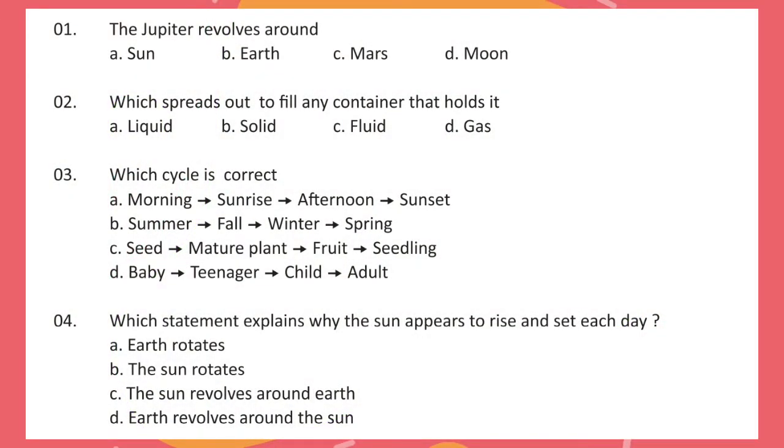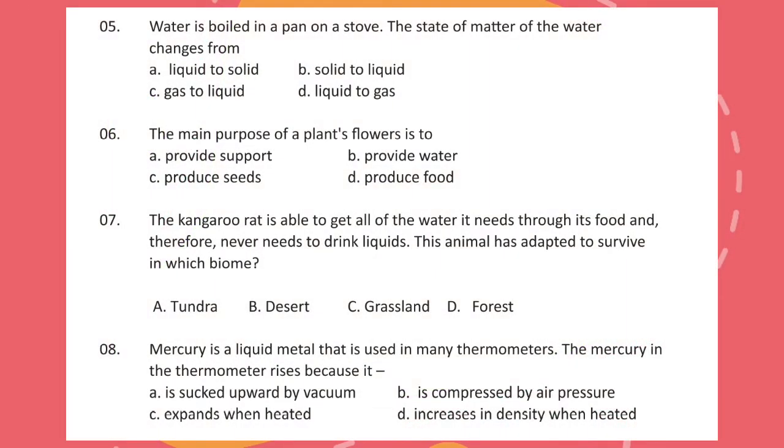Question 1: The Jupiter revolves around. Question 2: Which spreads out to fill any container that holds it? Question 3: Which cycle is correct? Question 4: Which statement explains why the sun appears to rise and set each day? Question 5: Water is boiled in a pan on a stove. The state of matter of the water changes from?